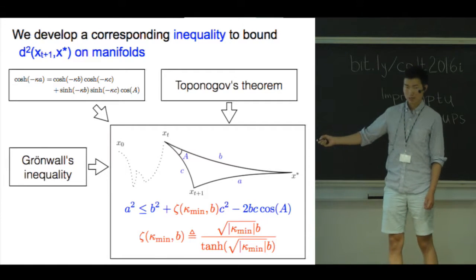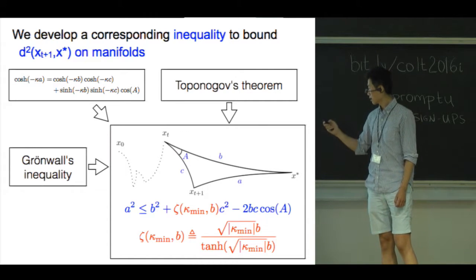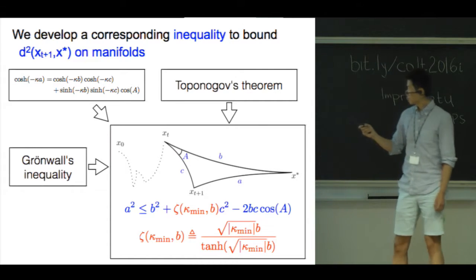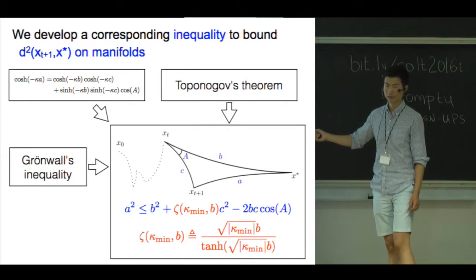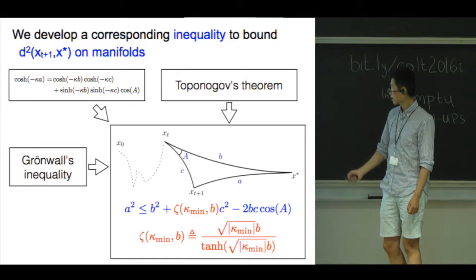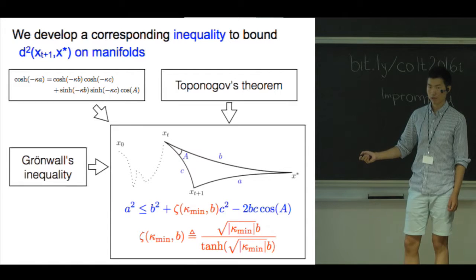Here kappa mean is the sectional curvature lower bound, and A and B are respectively the distance from the current iterate or the previous iterate to the minimizer.